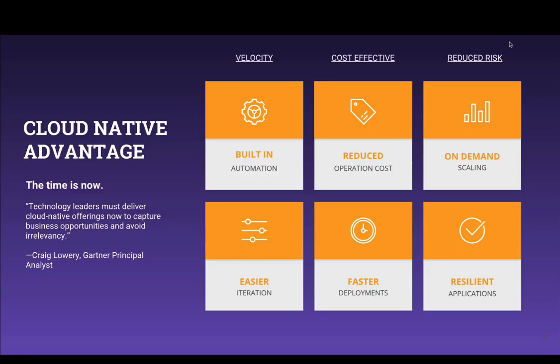And finally, Cloud Native reduces the overall risk of your application going down or becoming unavailable by providing on-demand scaling. So as the demand of your application increases, the resources will scale out so that your application will always be running at peak performance. And in the event that something does go wrong, Cloud Native resilient applications have features like auto-remediation and simple redeployment methods that will reduce the impact of the overall outage.